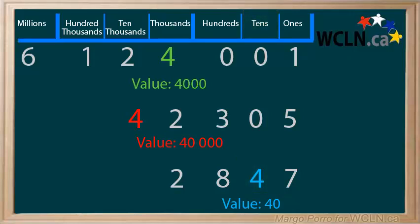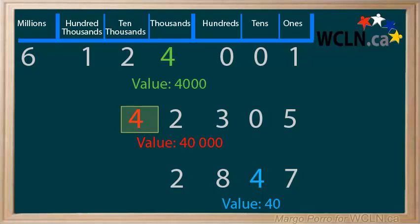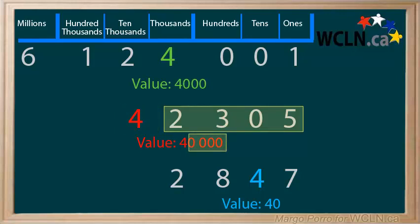Notice that the number of places after a digit is the same as the number of zeros given after that digit to show its value. The 4 in the first number is in the thousands place — it is followed by 3 digits. When we give the value of 4, it is followed by 3 zeros in the same way, to show the value of 4,000. The 4 in the second number is in the ten thousands place. It is followed by 4 digits, so when we give the value of 4, it is followed by 4 zeros, to show the value of 40,000.